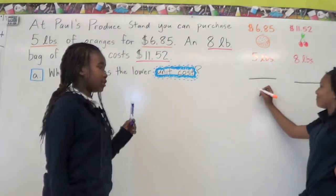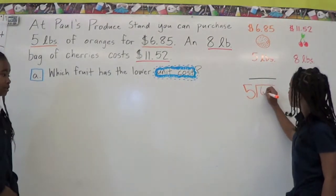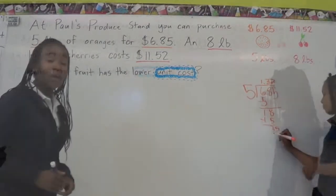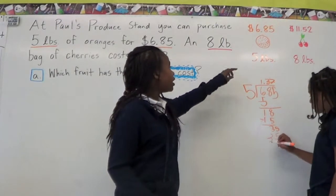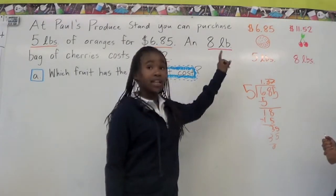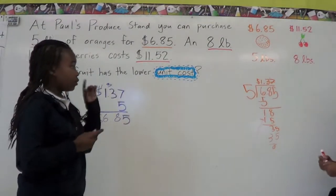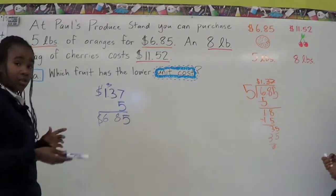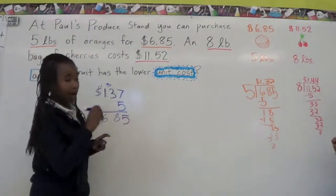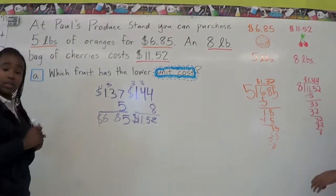Sadia is going to do the long division. While she's doing that, I'm going to multiply $1.37 by 5 pounds to verify that $6.85 is correct. That checks out. Now she's going to do $11.52 divided by 8, and I'll check that one too. That one is correct as well.